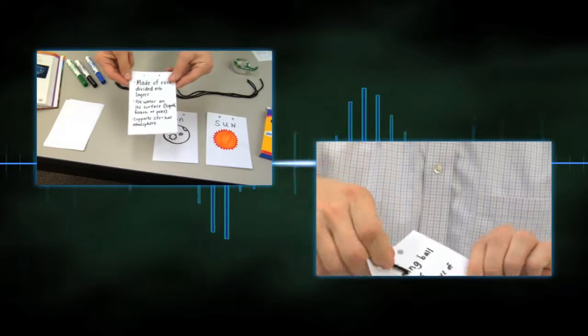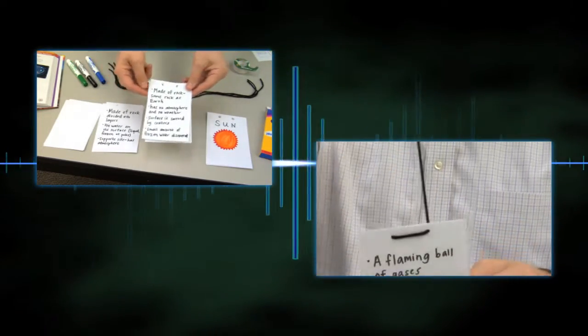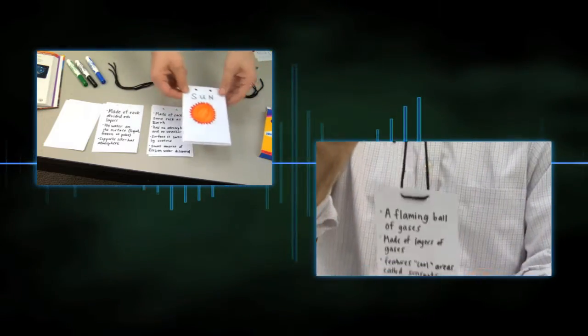In this activity, students create hang tag necklaces to identify and compare the physical characteristics of the Earth, Sun, and Moon.